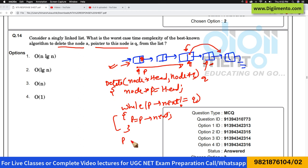And after this you can just make P arrow next is equal to Q arrow next, and then you can just delete Q. So you can write this kind of function to delete a node from the linked list.